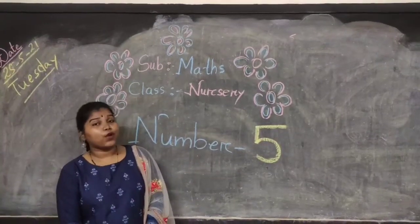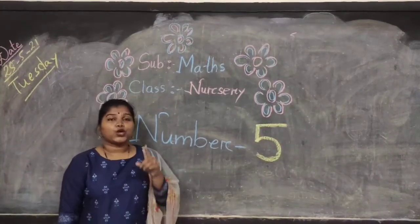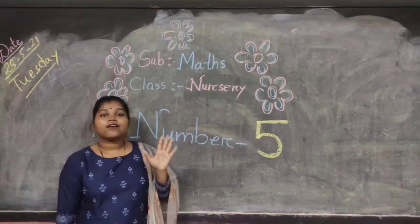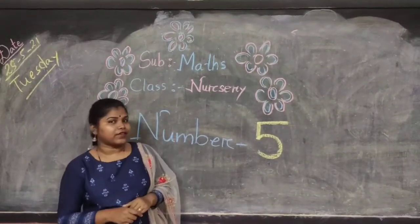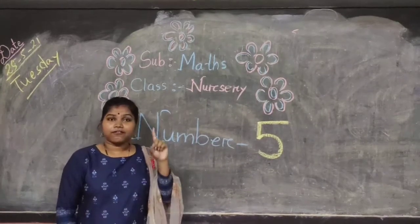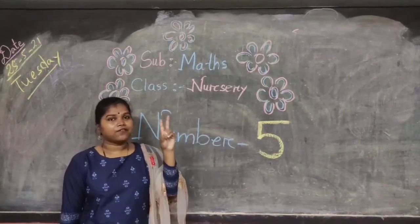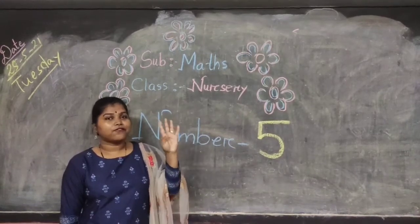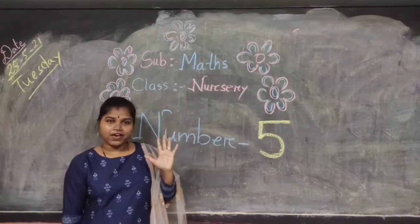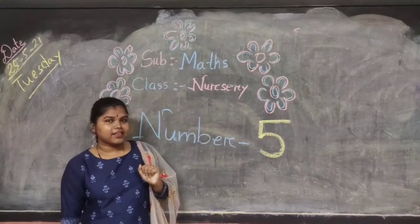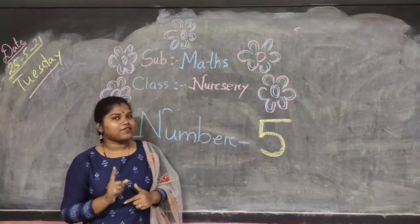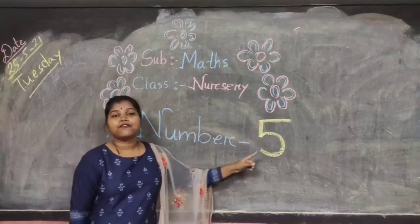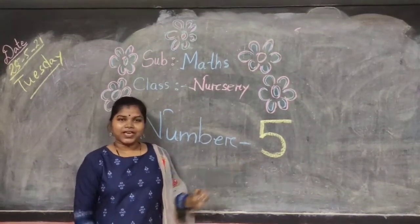As your home assignment, you pronounce 5 five times. For example: 5, 5, 5, 5, 5. Like this you have to pronounce 5 times. What do you have to pronounce? Number 5.